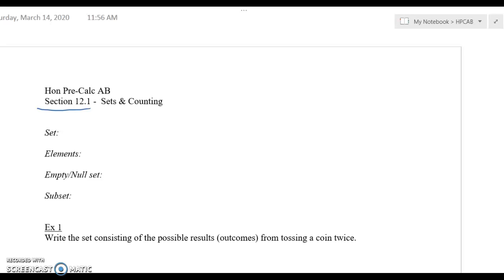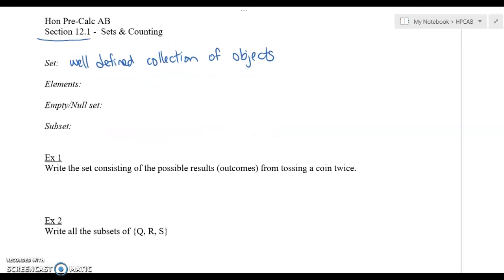So what we're going to be talking about are sets, elements, all kinds of stuff. So let's talk about what these mean. A set is going to be a well-defined collection of objects. So we're going to be dealing with sets of numbers or letters, things like that.